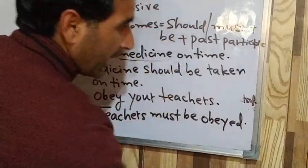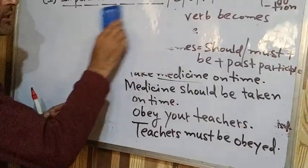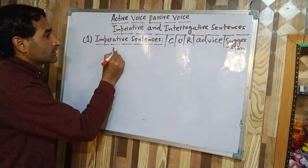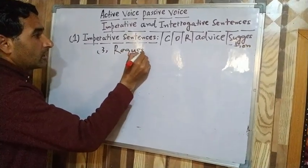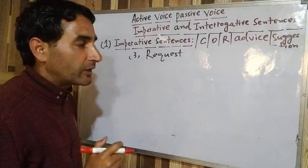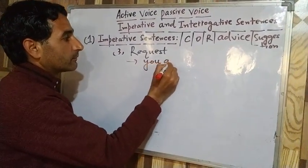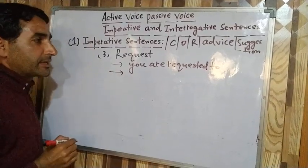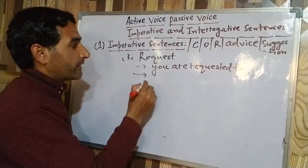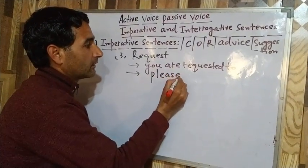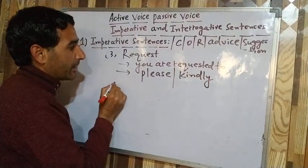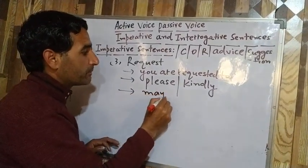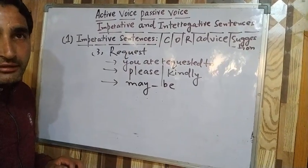There can also be an imperative sentence expressing request. For request, in the passive voice we usually write 'You are requested to...' In these imperative sentences expressing request, we usually find words like 'please' or 'kindly.' In the passive voice, 'please' or 'kindly' is placed between 'may' and 'be.'